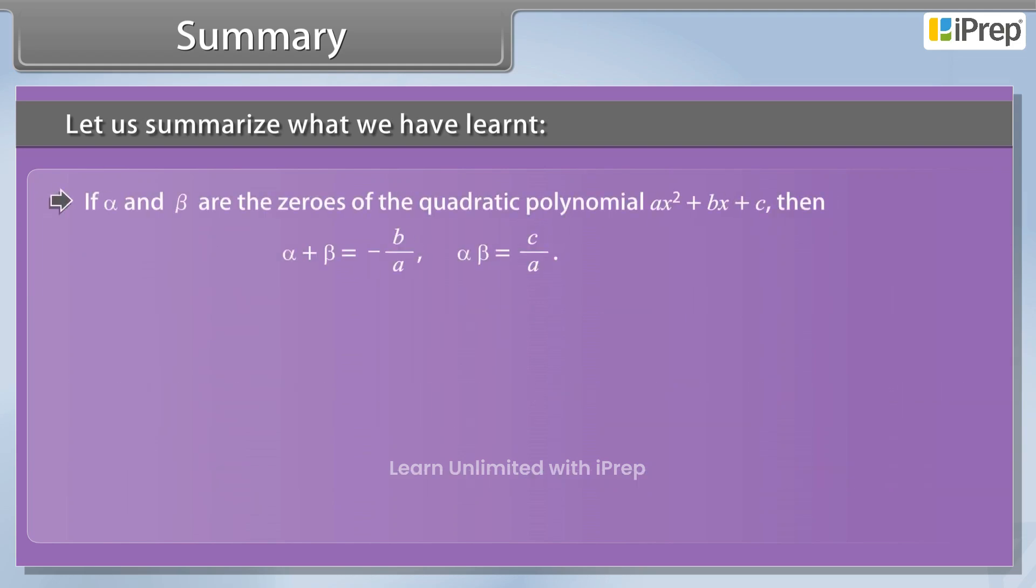If alpha and beta are the zeros of the quadratic polynomial AX squared plus BX plus C, then alpha plus beta equals minus B upon A, alpha beta equals C upon A.